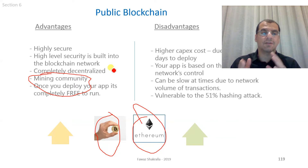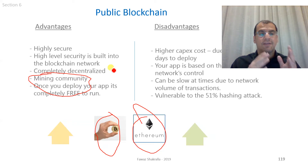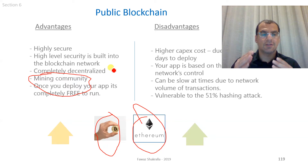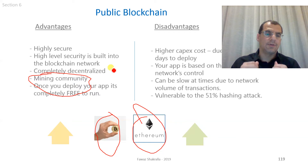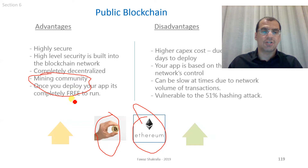Miners are invited into a pool depending on their hashing rate or hashing power. The higher the hashing power, the faster you'll be able to validate and confirm transactions on the network, and the faster you'll get paid.